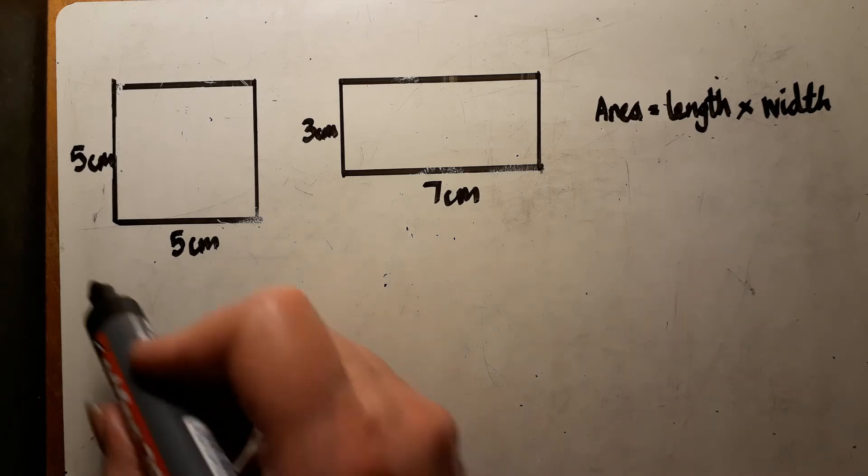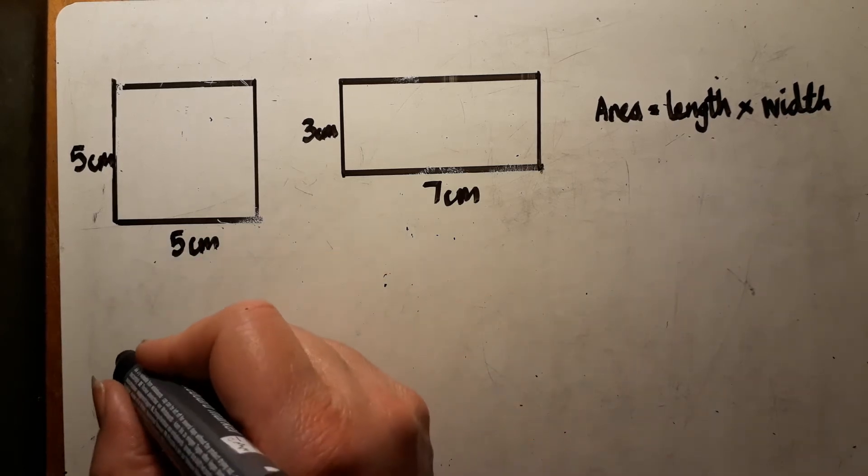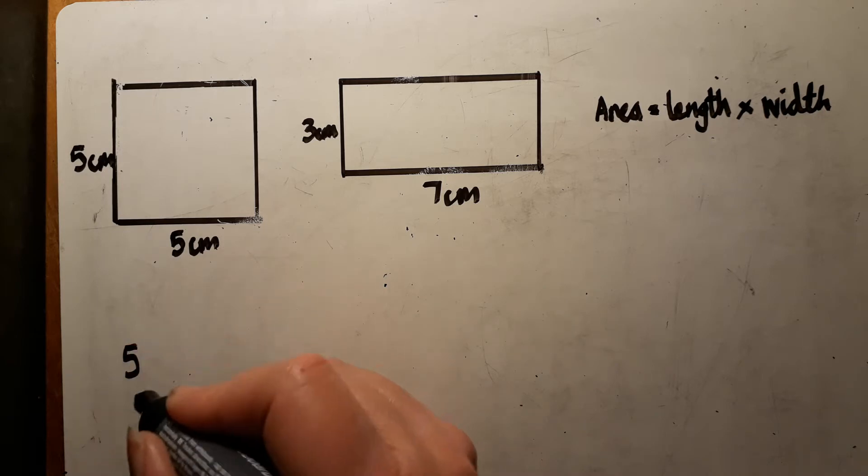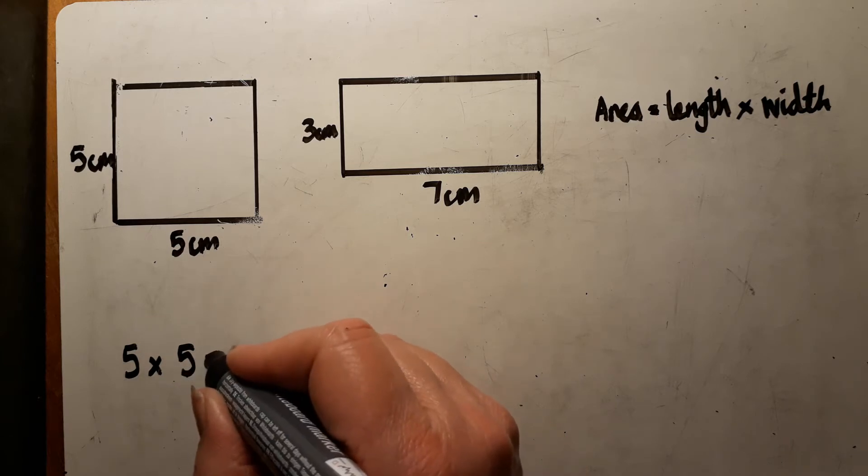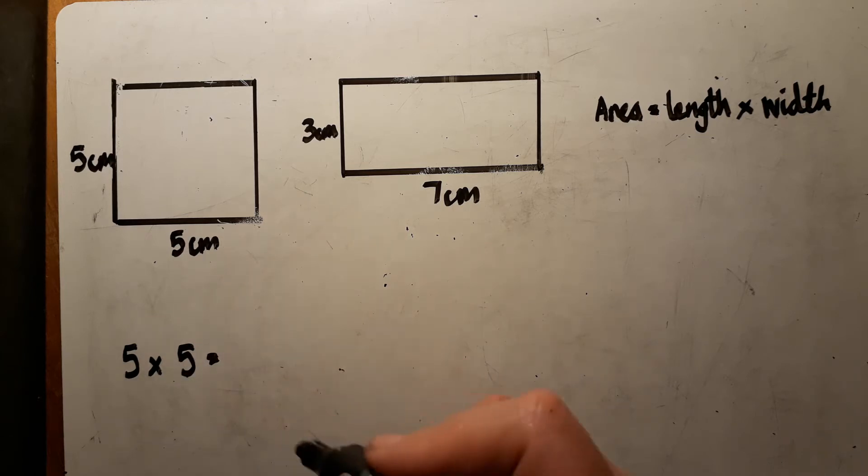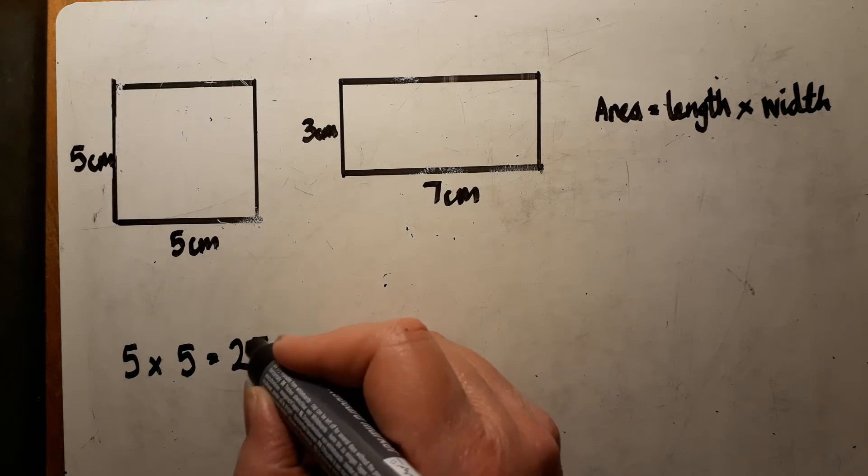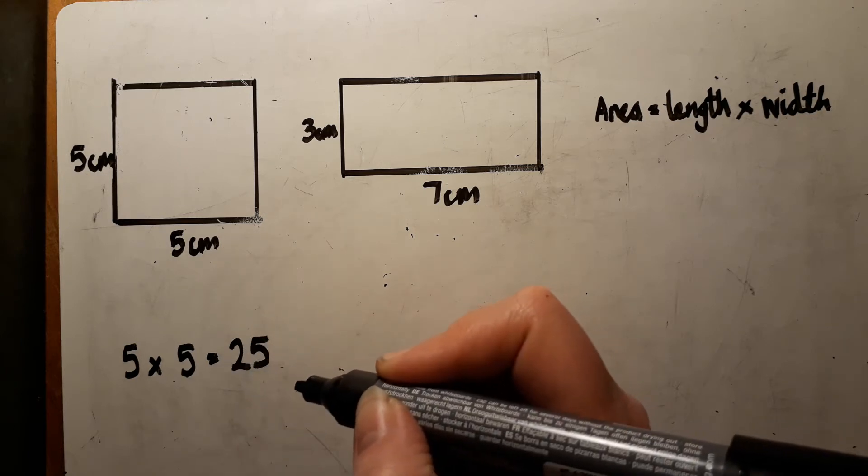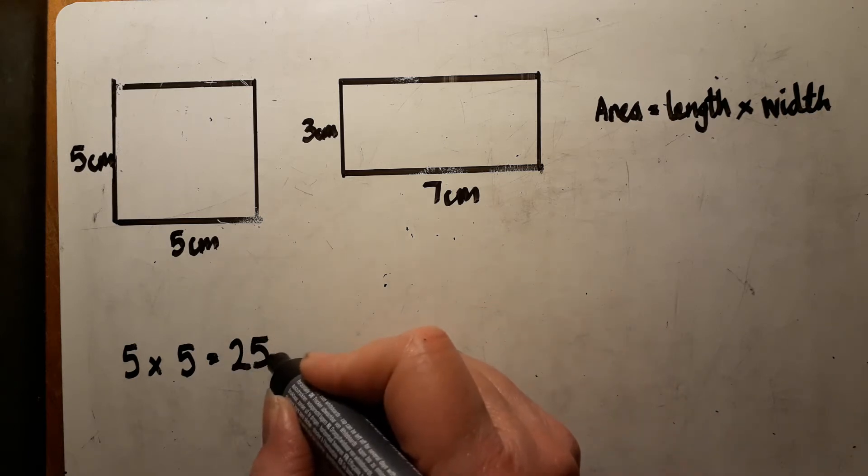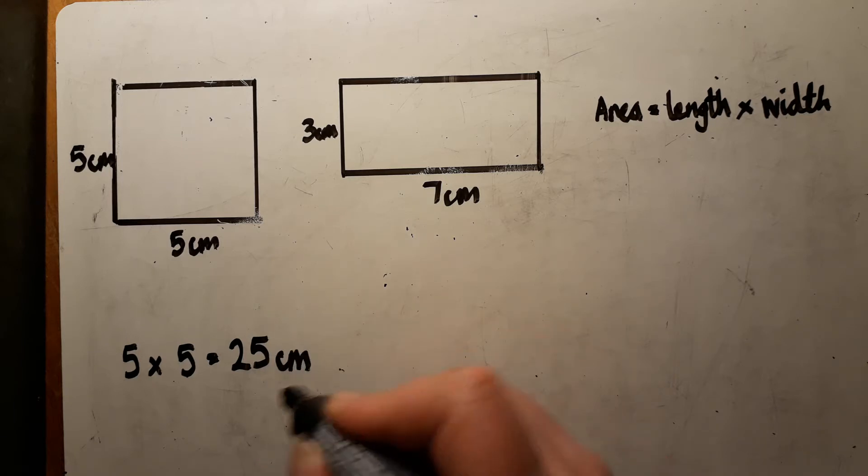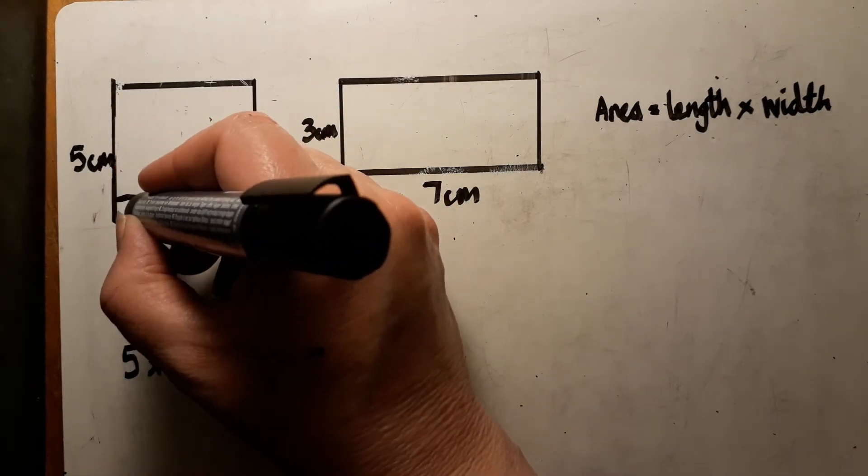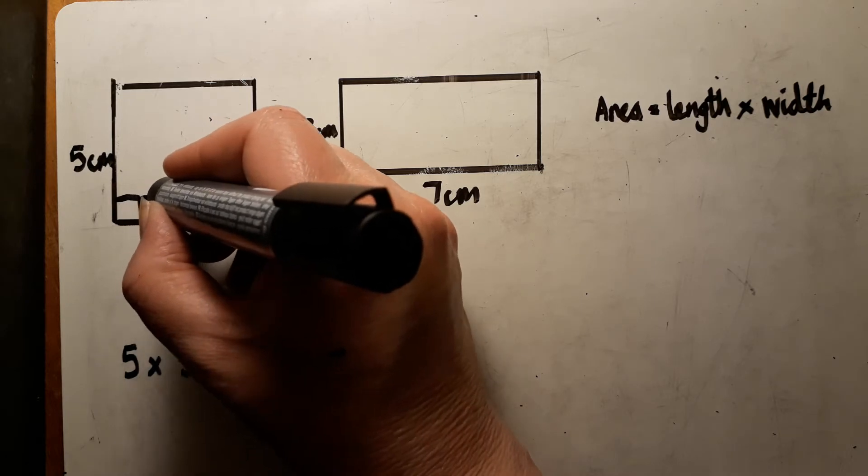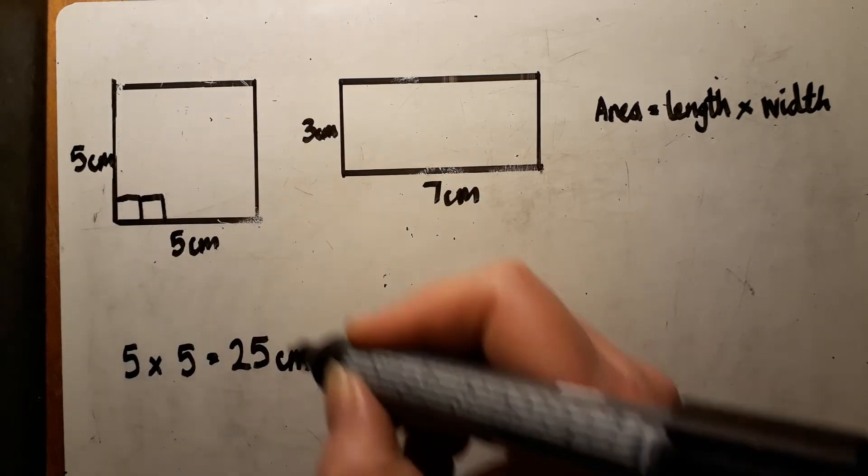So here my length is 5 centimetres and my width is 5 centimetres as well because it's a square. So 5 times 5 is 25. And this is centimetres, but because it's not a straight line, it's the space inside the shape. So we made up of 25 square centimetres.